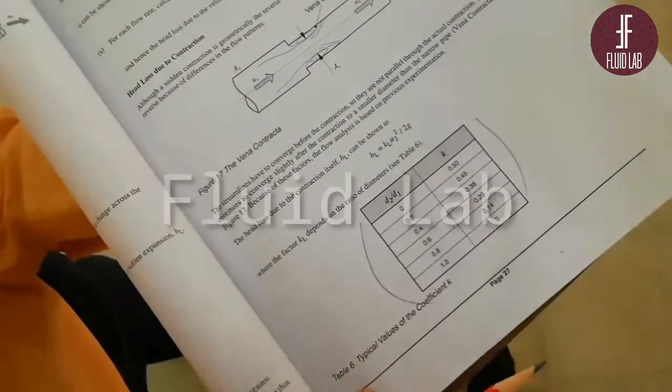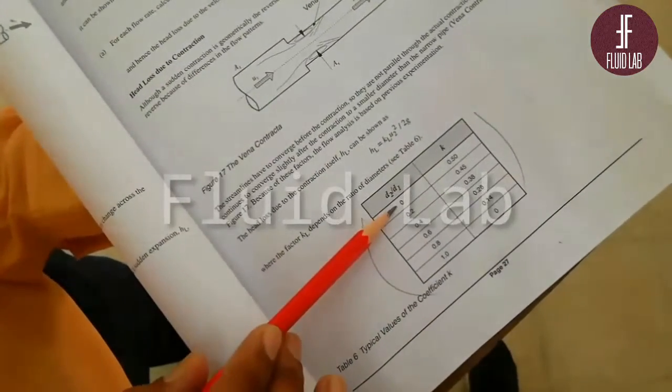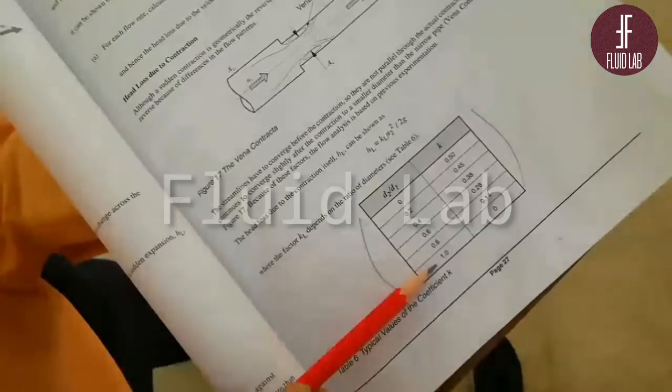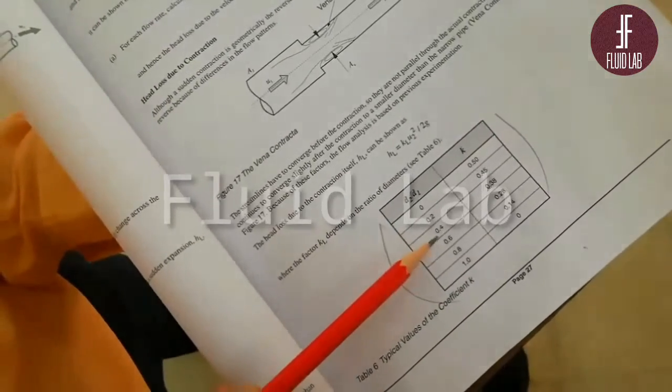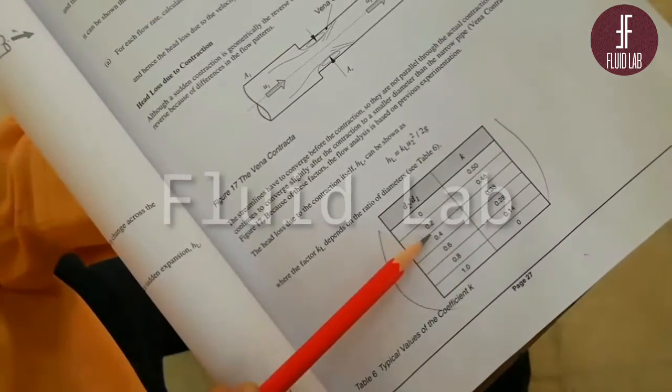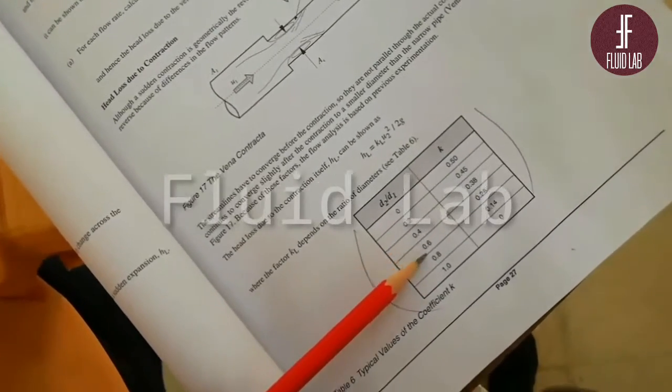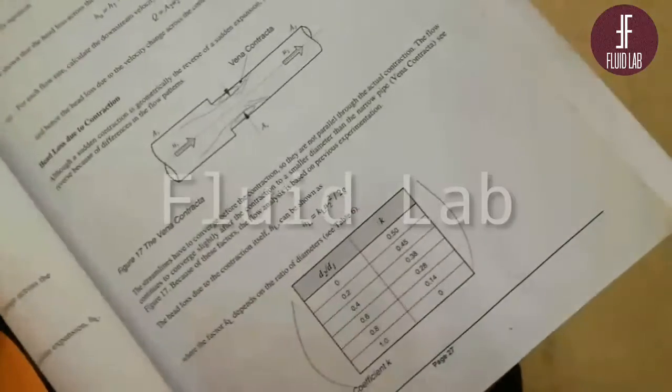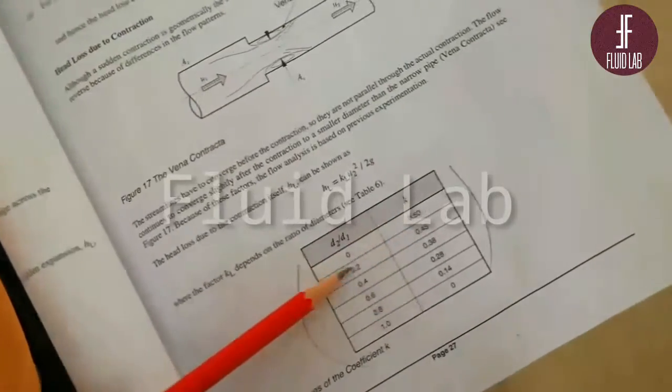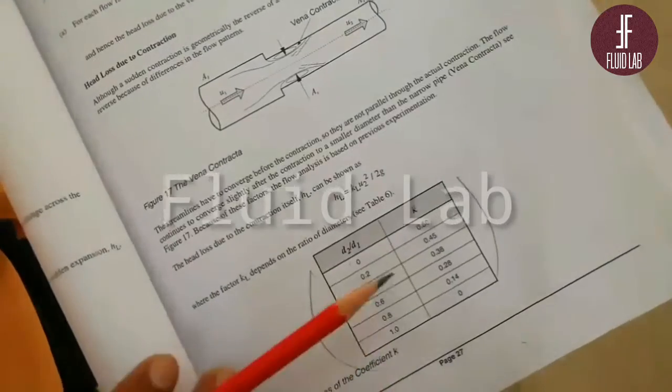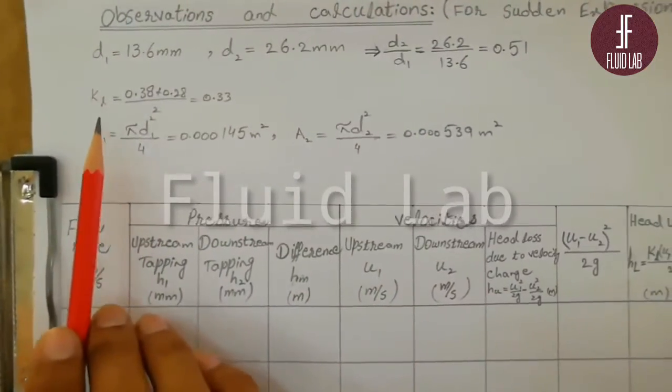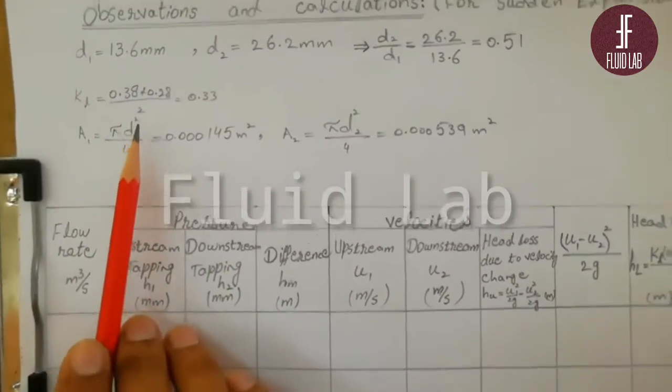From the user guide, the ratio of diameter varies from 0 to 1. In our case, the ratio is 0.5, so it is between 0.4 and 0.6. The K values are given against the ratio of diameters. By interpolation method, we have calculated the KL value.